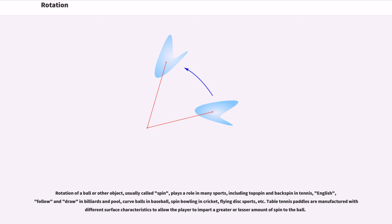Table tennis paddles are manufactured with different surface characteristics to allow the player to impart a greater or lesser amount of spin to the ball.